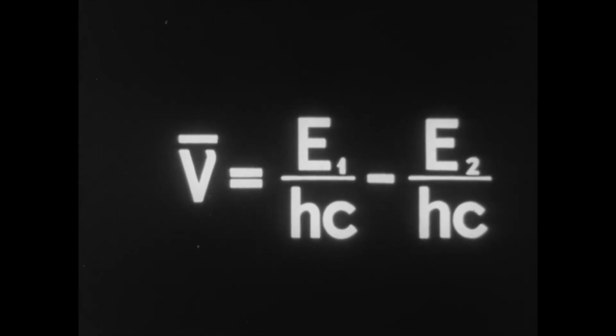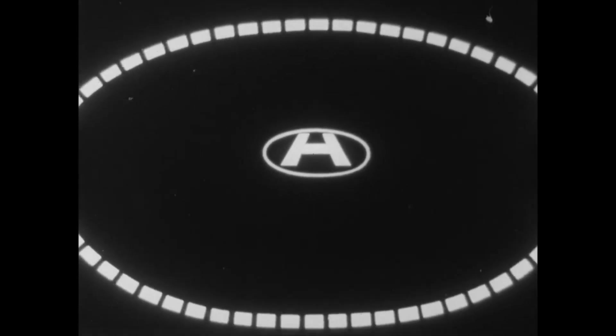If the energy of the electron in the atom has a value E1 and then E2, then the wavenumber of the emitted quantum is determined by this formula where h is Planck's constant and c is the speed of light.